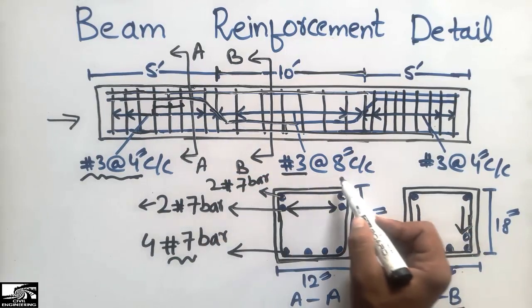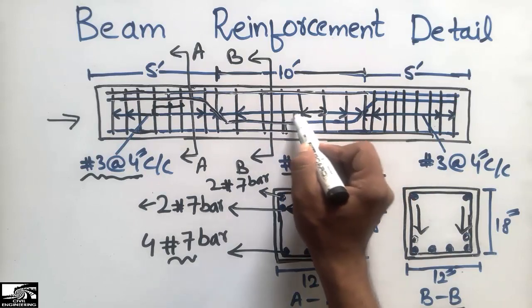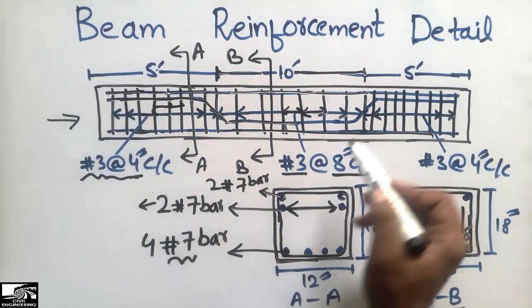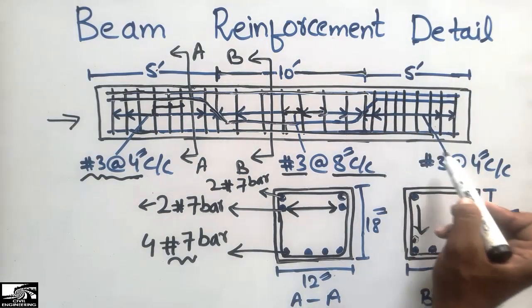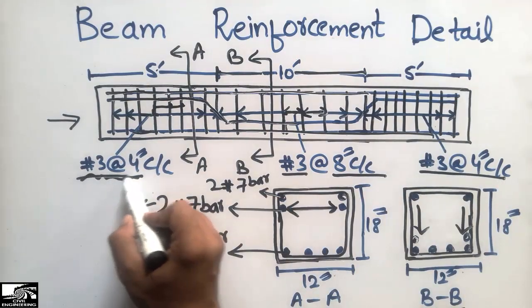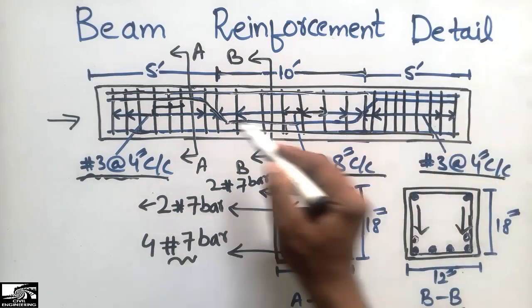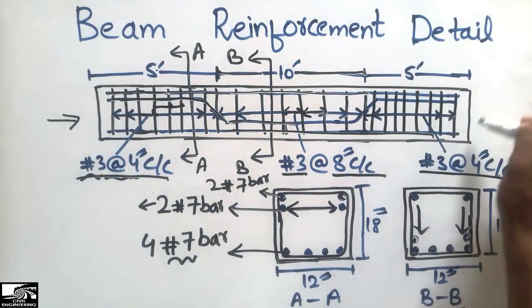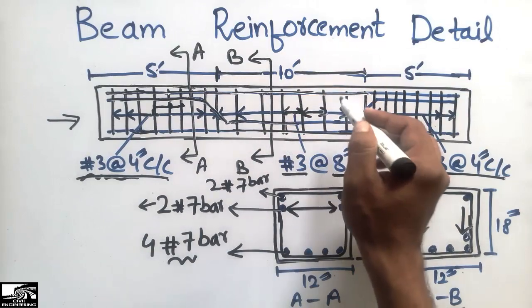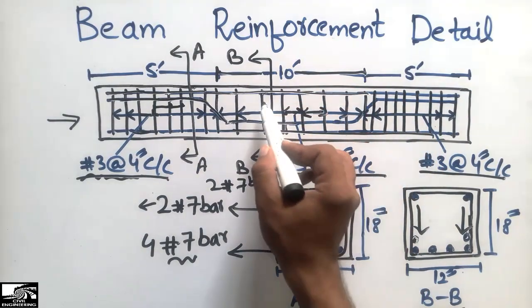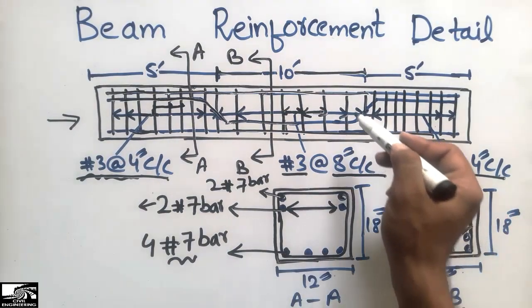In the 10-foot middle length of the beam, number 3 stirrups are used at 8 inches center to center — more spacing compared to the end zones. At the far end of the beam, number 3 stirrups return to 4 inches center to center, the same as the start. Stirrups are closely spaced at the supports because of higher shear force demand, while at mid-span the shear demand is lower, so wider spacing is sufficient.